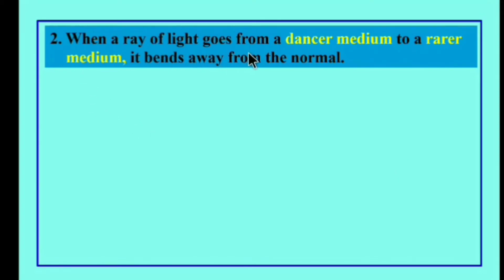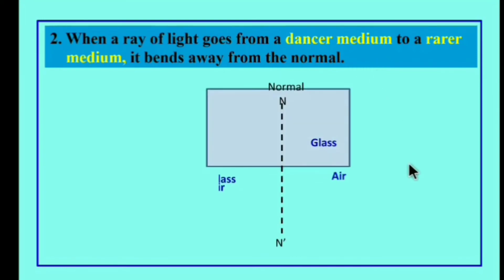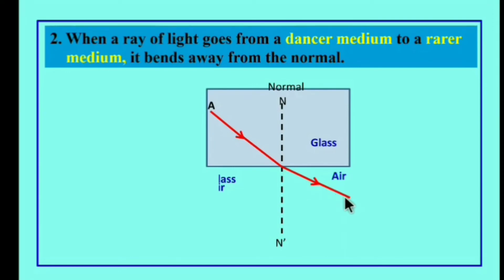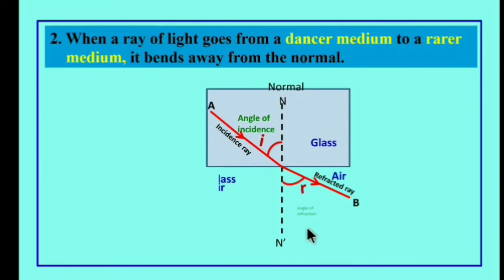Rule 2: when a ray of light goes from a denser medium to a rarer medium, it bends away from the normal. For example, a light ray moving from glass (denser) to air (rarer) — after bending, this light ray moves away from the normal. In this case, the angle of incidence is less than the angle of refraction.